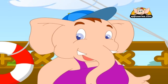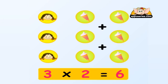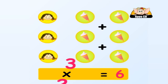In multiplication, the numbers can be interchanged, but the answer will still remain the same. For example, 2 multiplied by 3 is the same as 3 multiplied by 2.